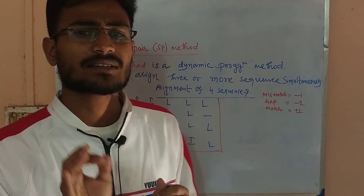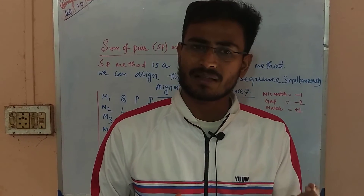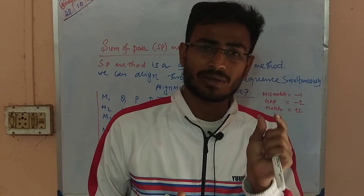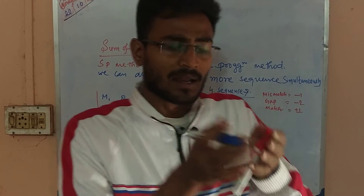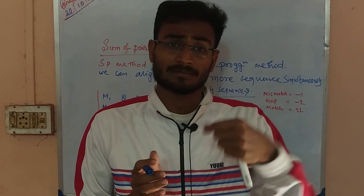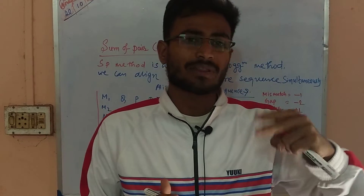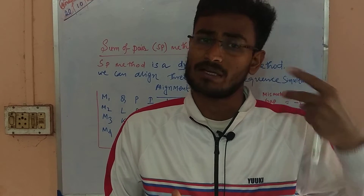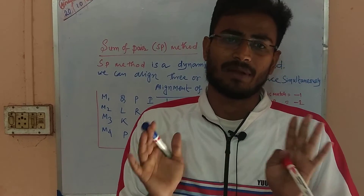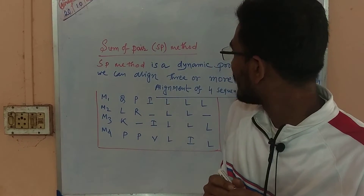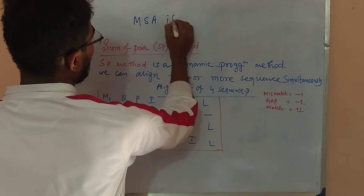Multiple sequence alignment — by splitting the name, we understand that multiple sequences are being aligned. A sequence here refers to what we see in pairwise sequence alignment. Pairwise means two sequences; when we go from two to three, four, five, or six sequences, that becomes multiple sequence alignment. So multiple sequence alignment is nothing but the extension or updated version of pairwise sequence alignment.